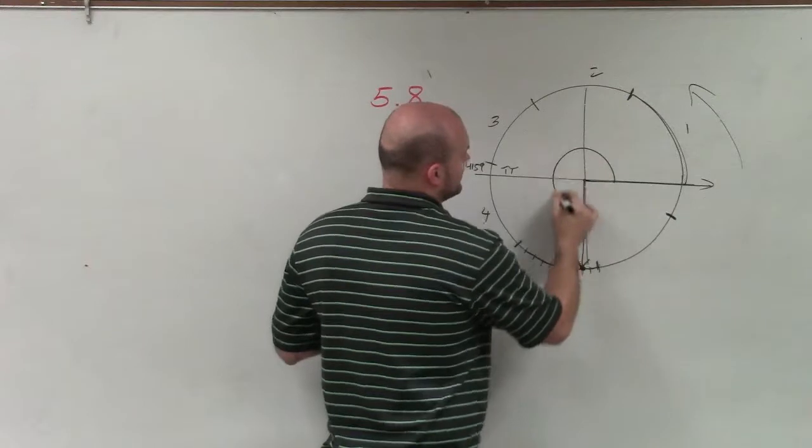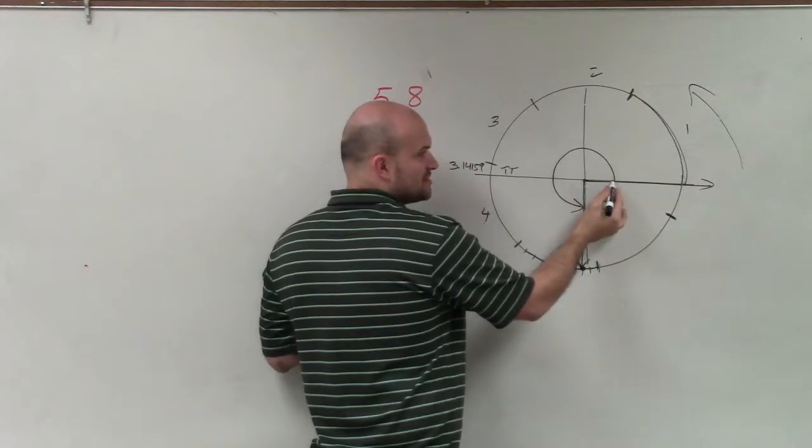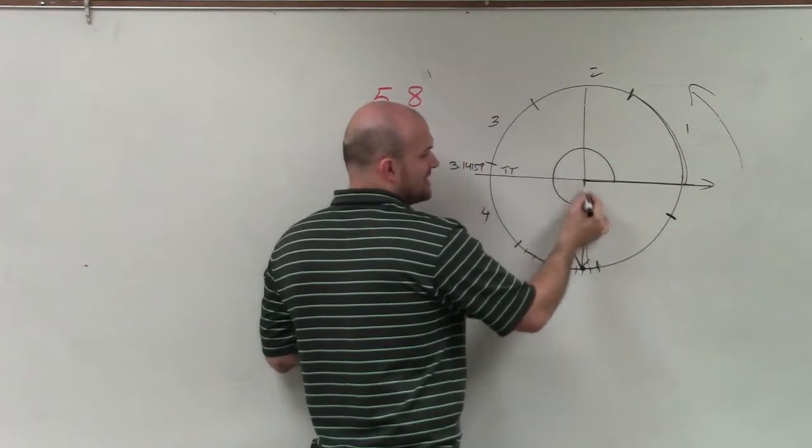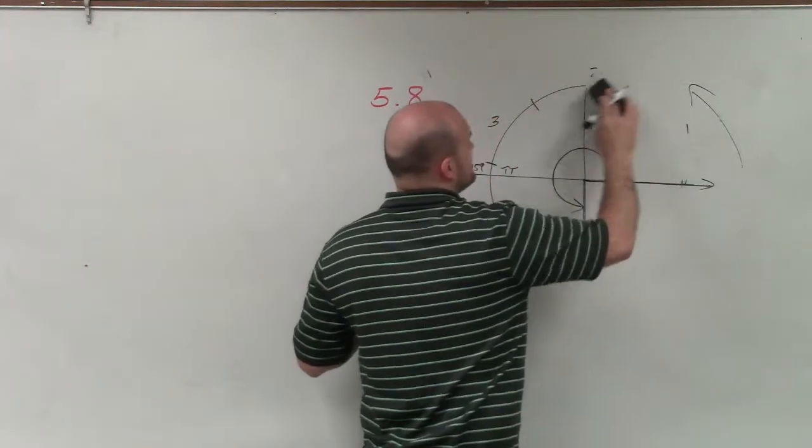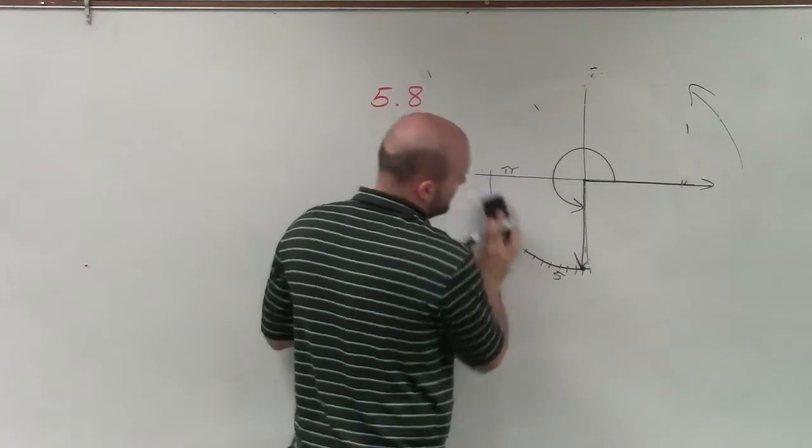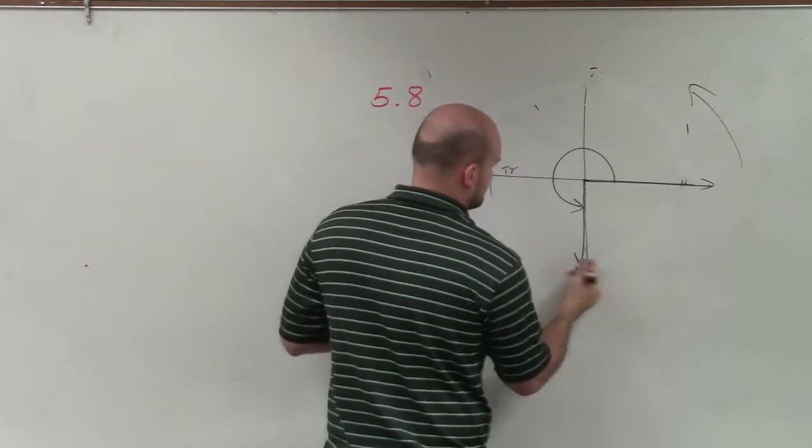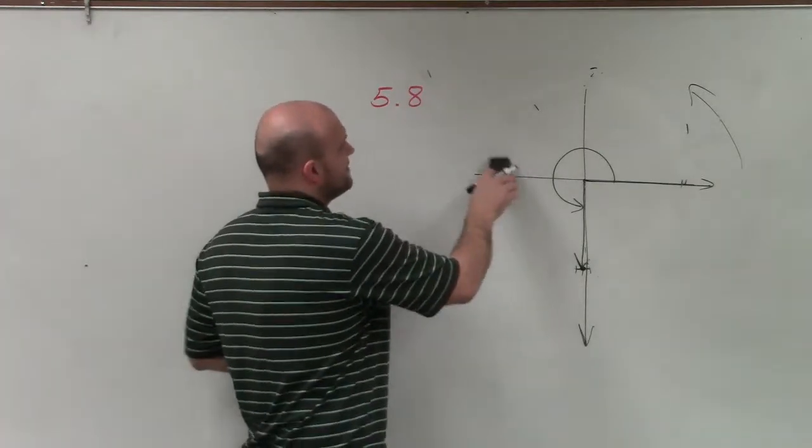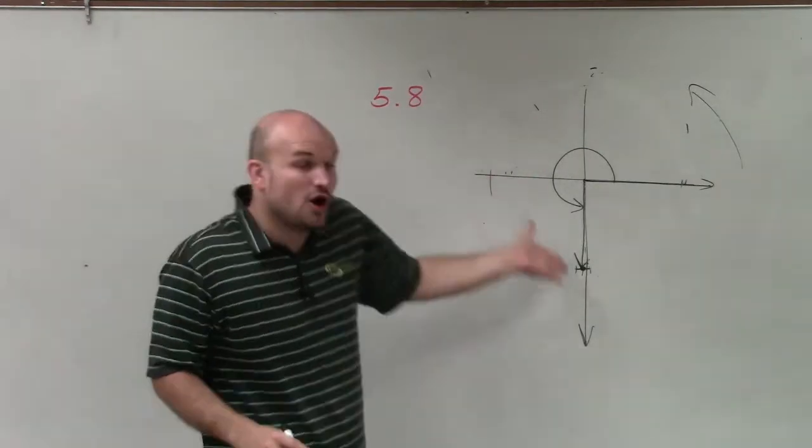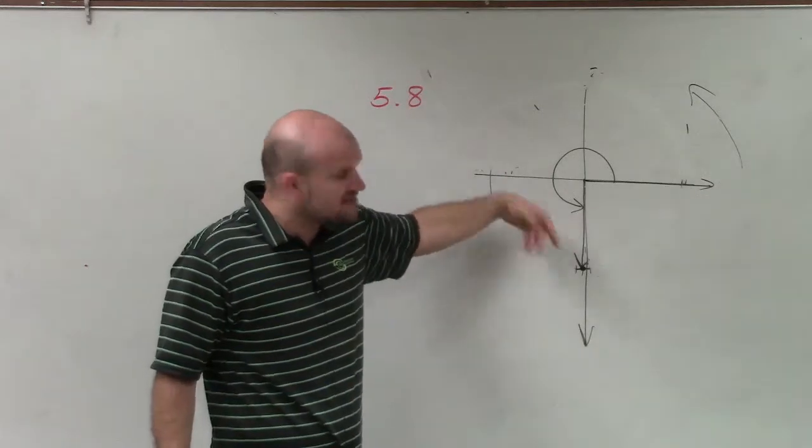So therefore, the angle starts at my initial side, and then it's going to rotate all the way down to my terminal side. And then, if I just want to sketch everything else, I can kind of erase the rest of my circle here and all this extra information. That's my x-axis. That's my y-axis. And therefore, you can see the sketch of the graph, which is almost like 270 degrees. It's almost at the x-axis.